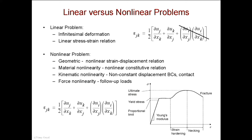In Abaqus, for example, in the step definition — star step, comma, nlgeom — if you make that null, it's going to use small strain approximations. It makes sense if the strains are small, say one percent, so 0.01 times 0.01 is really small compared to the strain itself. This term is going to dominate the strain value. So small strain makes sense if you're less than one to two percent.